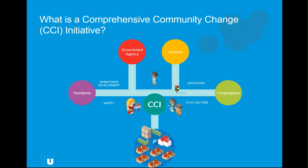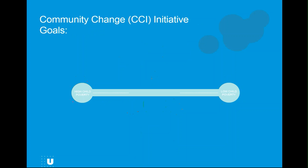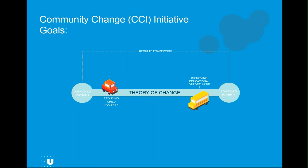One way to visualize a CCI is to think of a busy transportation system. Each mode of transportation — whether it's a car, school bus, train, or boat — provides a different type of service but serves the common purpose of getting people where they need to go. CCIs base their efforts on a theory of change, which is their underlying assumption for what it will take to achieve key goals such as reducing child poverty or improving educational opportunities. CCIs develop plans called Results Frameworks to express their theory of change in actionable terms, specifying how they will measure progress and identifying the partners and strategies needed along the way — similar to a map or GPS system that provides directions from point A to point B.